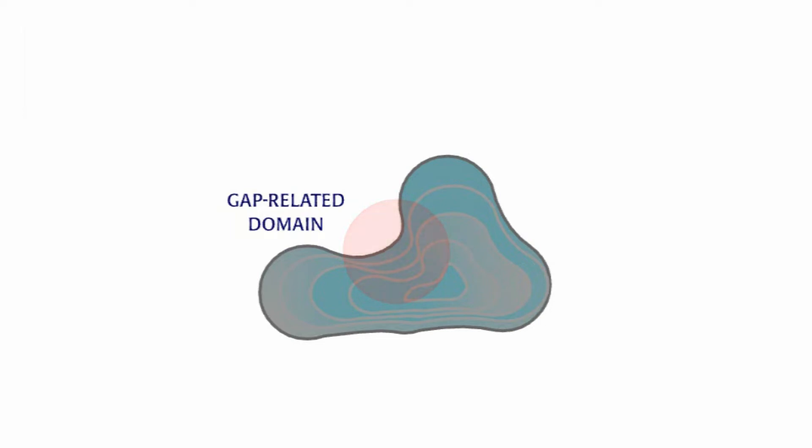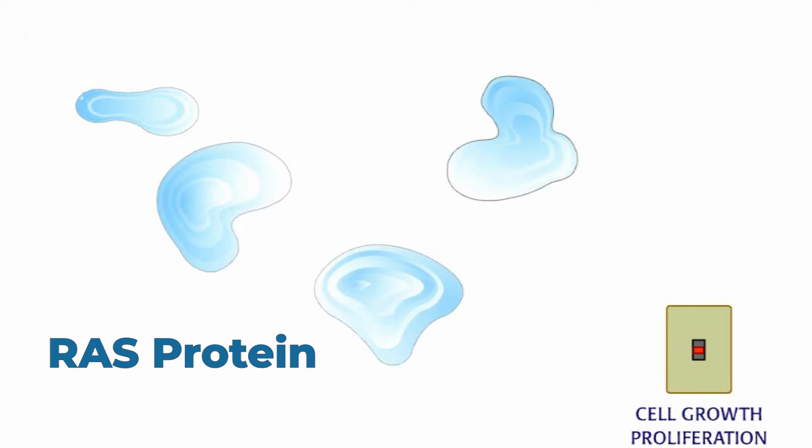This region of neurofibromin is believed to act similarly to RAS, a key protein involved in the control of cell growth and proliferation.